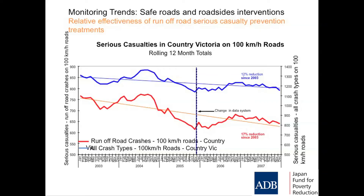This is just an example of the way you can use measured outcomes to tell you what is really happening. This shows serious casualties on the State Highway Network in Victoria over a number of years — going down at about 12% from 2003 to 2007, so the trend is good. But in that period we had spent a lot of money on roadside barriers to prevent run-off-road crashes becoming serious or fatal. So we measured what was happening to a subset — run-off-road crashes on 100 km/h country roads where we had concentrated our investment. The trend was even more positive: a bigger reduction on those roads than on roads generally. There's a lot of information you can generate from your own crash data sources if you think about what you're trying to demonstrate to your politicians.